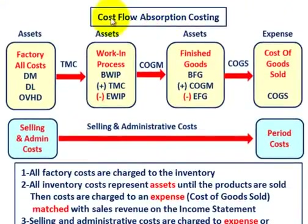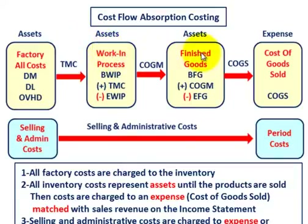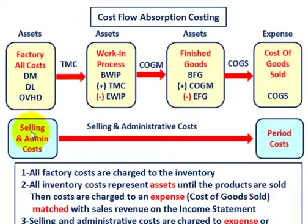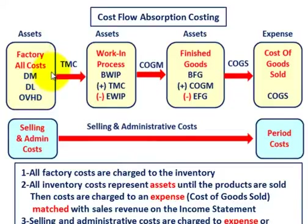The next thing we're going to go through is the cost flow for absorption costing. What I'm showing here is the cost flow: we're going to have our asset accounts, those factory costs flow into work in process, then finished goods, and then they end up as an expense under cost of goods sold. We're breaking apart the factory costs versus the selling and administrative costs. All those factory costs — direct materials, direct labor, and all overhead — are accumulated and flow as total manufacturing costs into our work in process account.